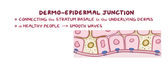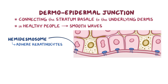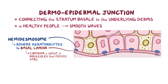If you look closely at this junction, there are two parts. The first part is the lower portion of the plasma membrane of the keratinocytes in the stratum basale, which contains glue-like substances called hemidesmosomes. These hemidesmosomes adhere keratinocytes of the stratum basale to the second component of this junction, called the basal lamina. The basal lamina contains a group of molecules that provide structural and biochemical support to the keratinocytes.